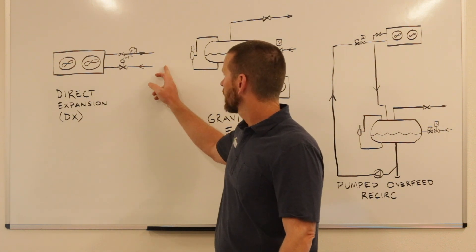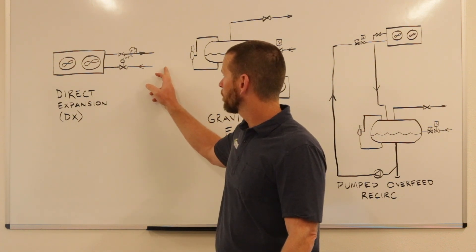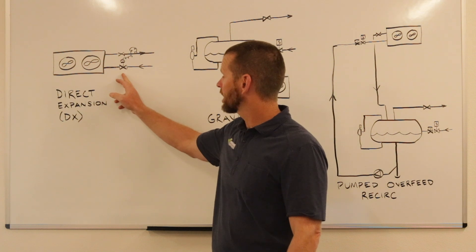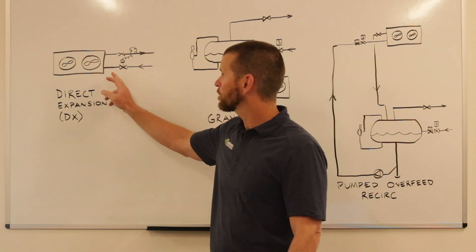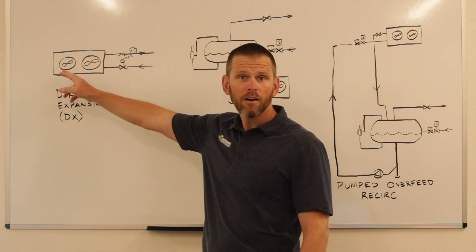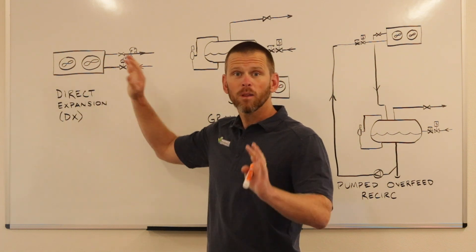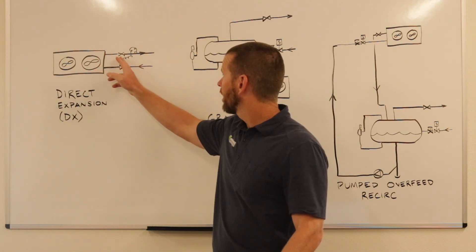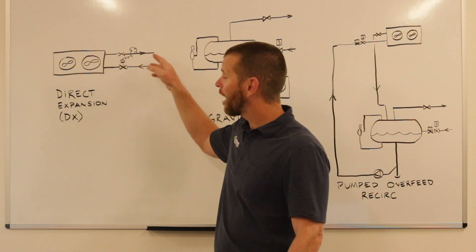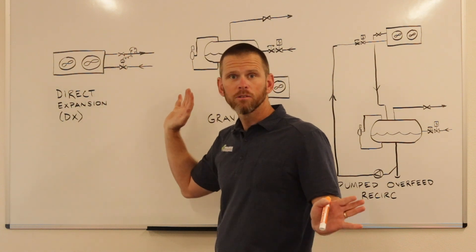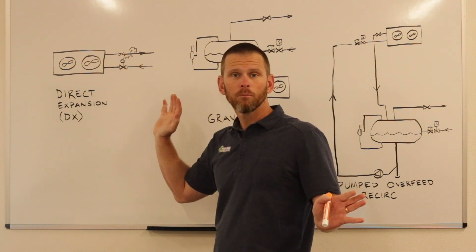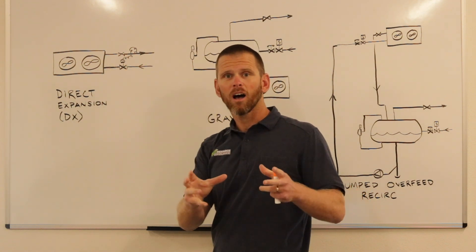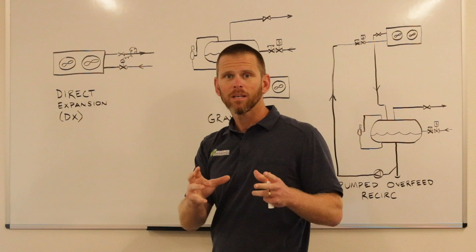As you can see, high-pressure liquid comes through an expansion device directly into the evaporator, exits the evaporator — usually through a valve — and back to the compressors. So this is a low-cost option.